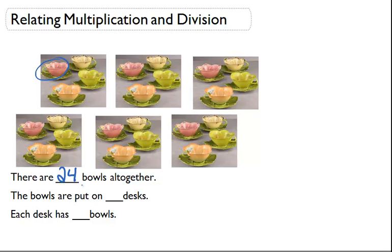But let's try to figure out a way to do that much faster than we already did. So the bowls are put on how many desks? We know that there's 1, 2, 3, 4, 5, 6 desks that we see here. So there are 6 desks.